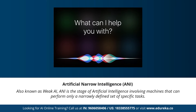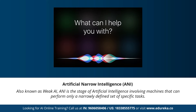Artificial narrow intelligence, also known as weak AI, is the stage that involves machines that can perform only a narrowly defined set of specific tasks. At this stage, machines don't possess any thinking ability — they just perform a set of predefined functions. Examples of weak AI include Siri, Alexa, AlphaGo, Sophia, and self-driving cars. Almost all AI-based systems built to this date fall under the category of weak AI or artificial narrow intelligence.